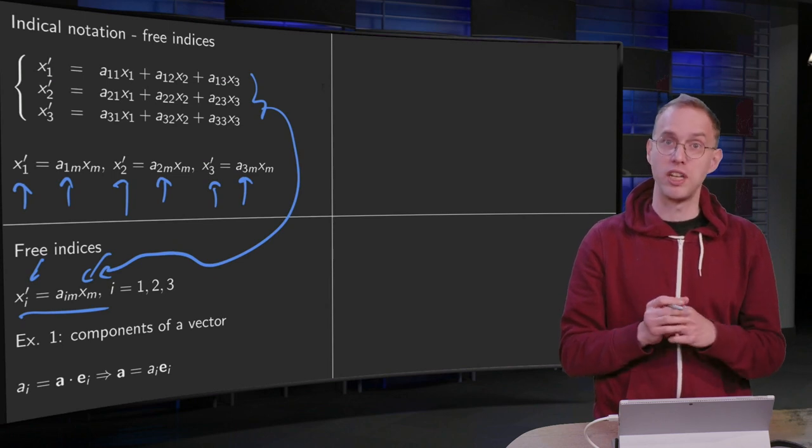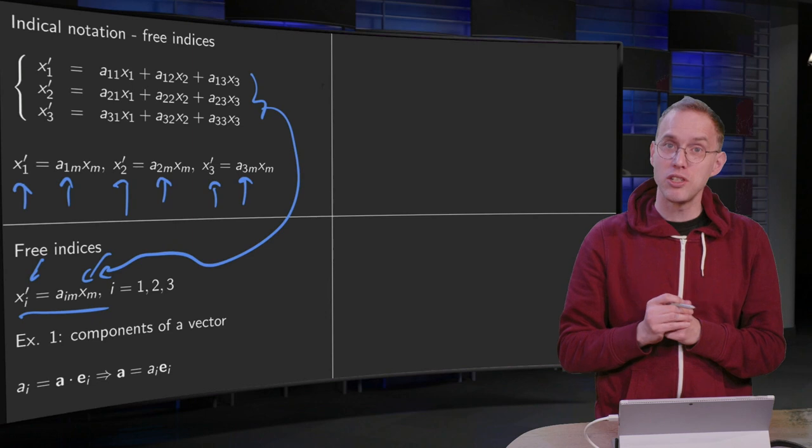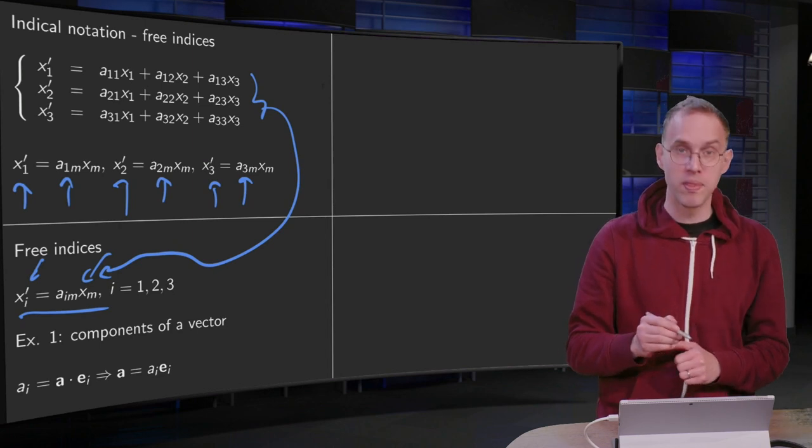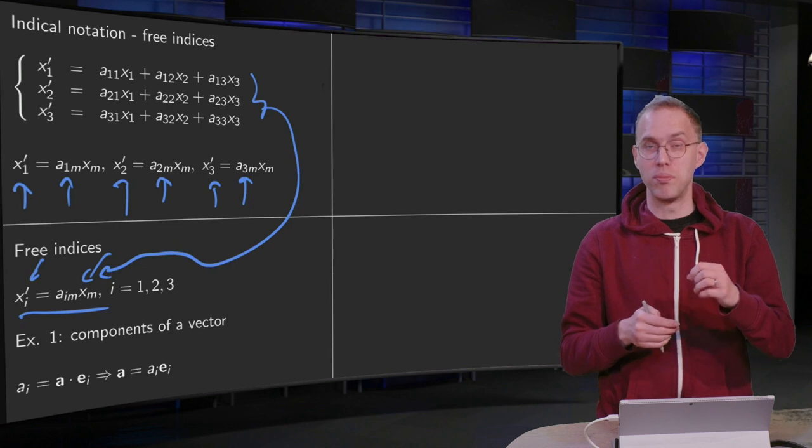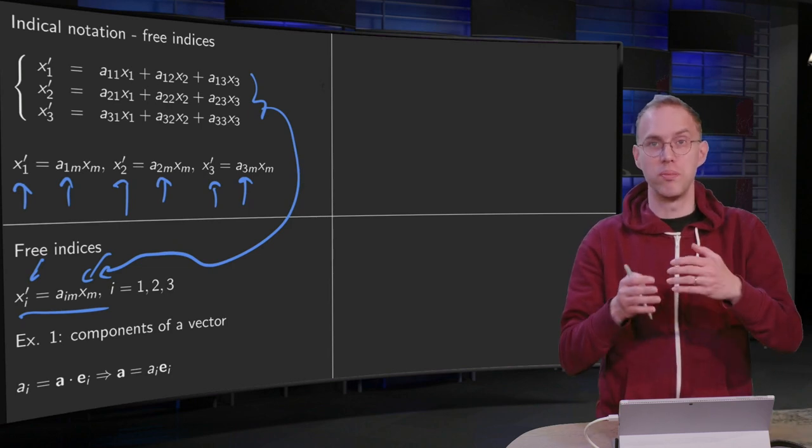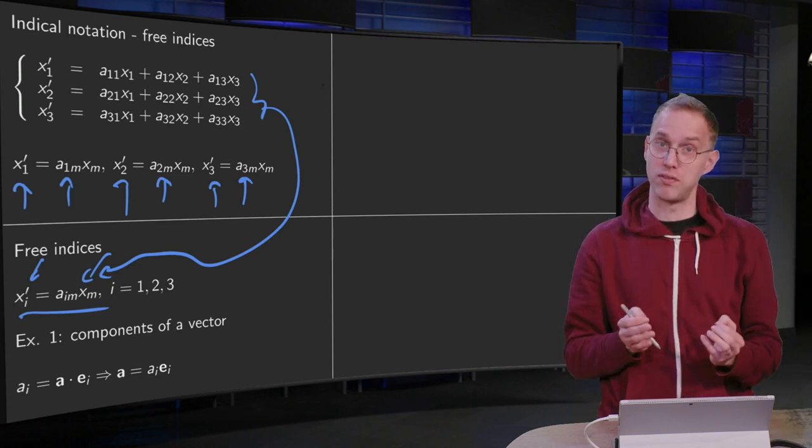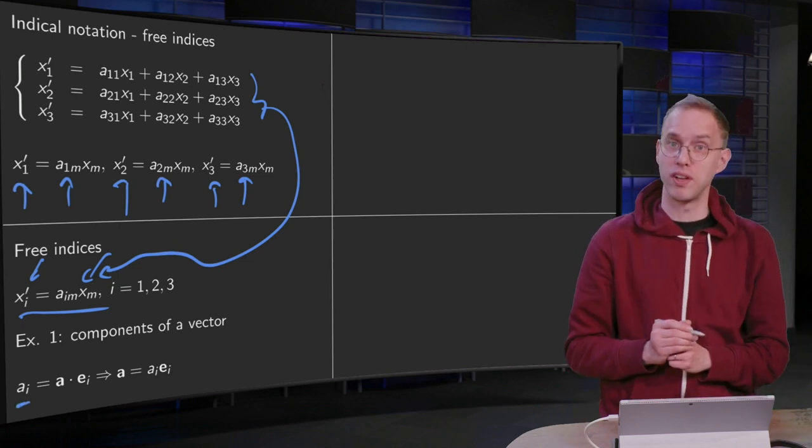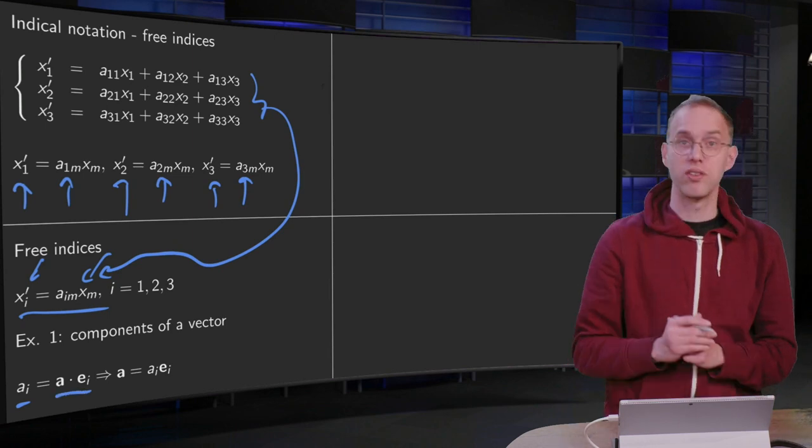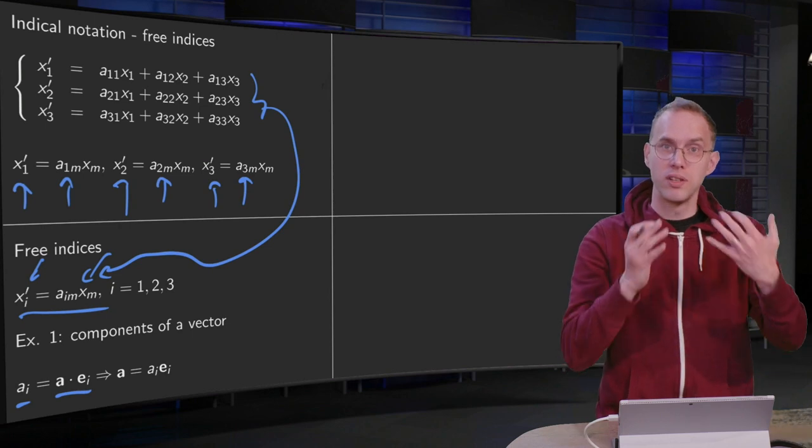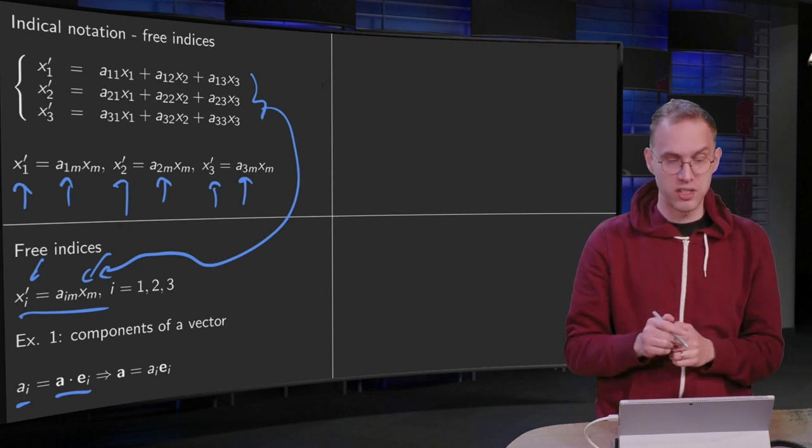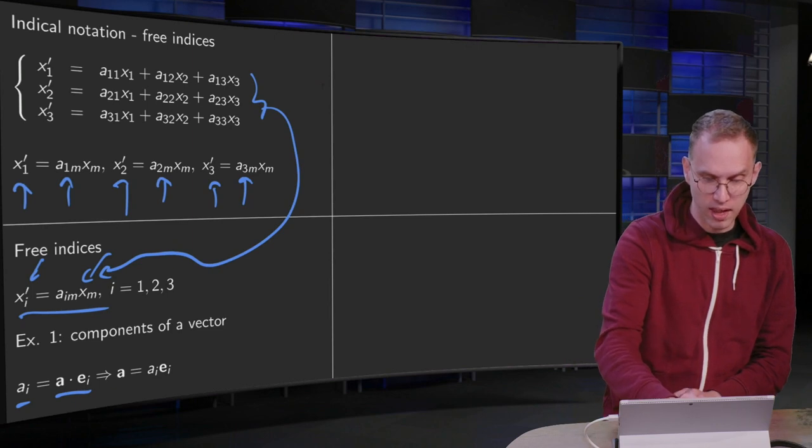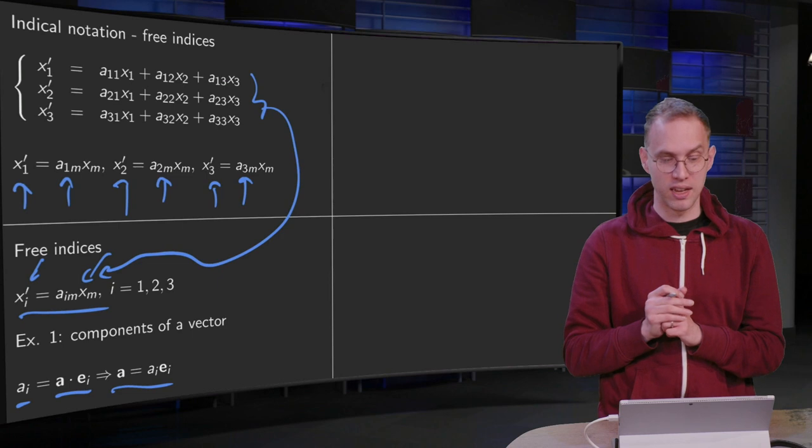So using this one line expression we can write all of this math—a way to really shorten the notation. Let's do a few examples with these free indices. For example, we can take a look at components of a vector. If you have a vector a, we can find the i-th component by taking the inner product with ei. In general, you can find the i-th component of a vector a by taking the inner product with ei. Note that you can use this to write your vector a using summation convention as ai times ei.